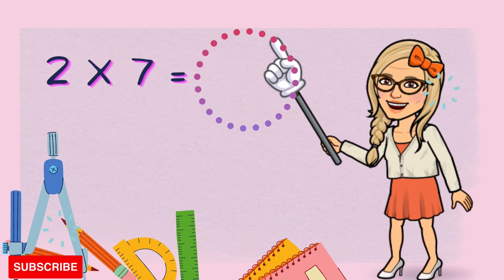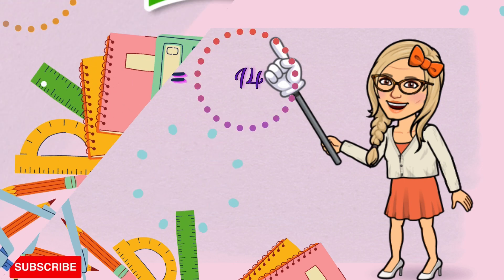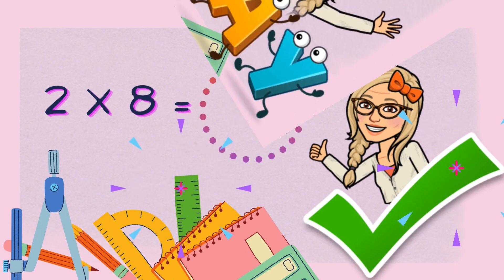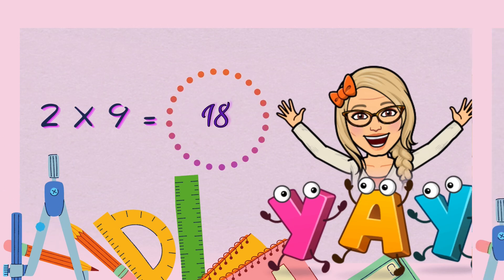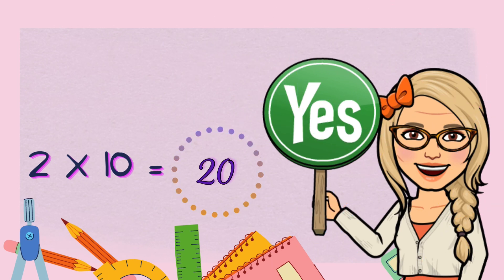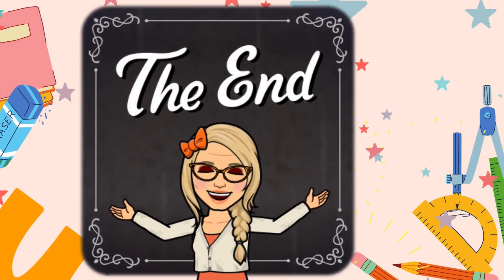Two times six: twelve. Two times seven: fourteen. Two times eight: sixteen. Two times nine: eighteen. Two times ten — the easiest one! Twenty. The end!